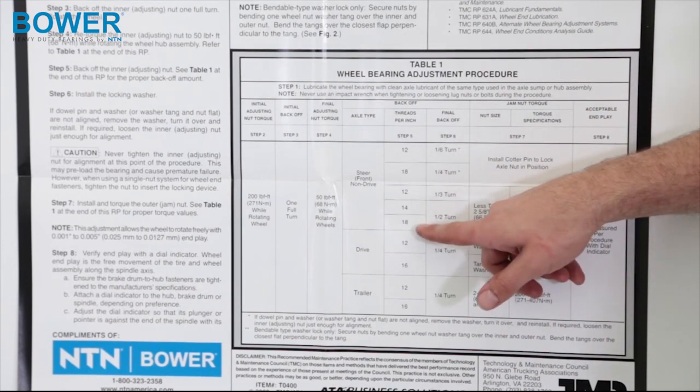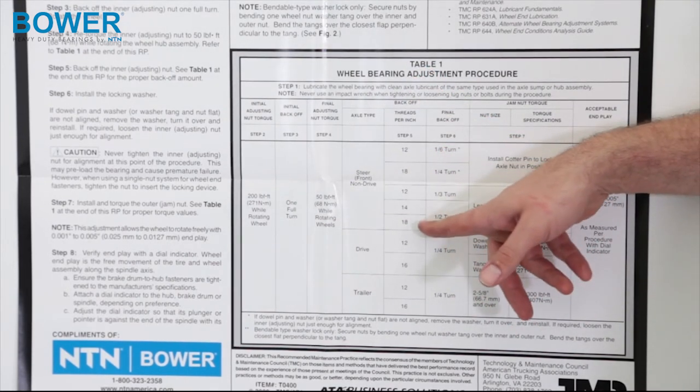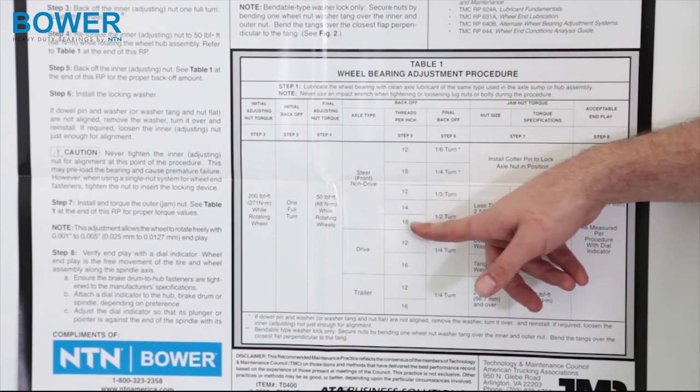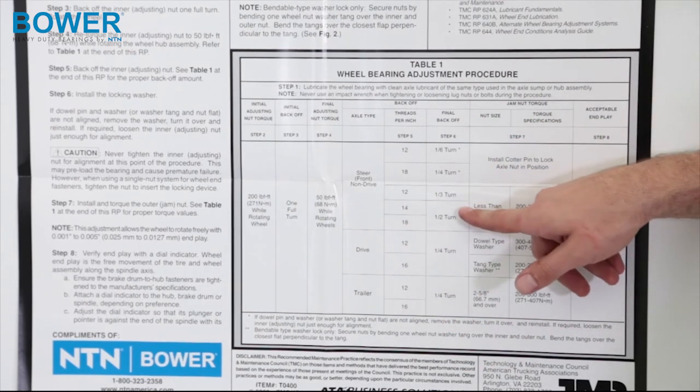For the over the road 18 wheeler class 8 market, it's these three. So, you have to ask yourself, how many threads per inch? Ours here is 18 threads per inch. You then move over to our final back off. Here we are, a half turn.